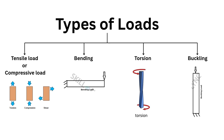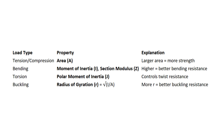Different shapes behave differently under these load conditions. There are some key properties from which we can easily understand the section strength under different types of loading. In tension or compression, the important property is the cross-sectional area — if the area is larger, it gives more strength. In bending, the moment of inertia and the section modulus play a key role; higher moment of inertia and section modulus means better bending resistance. In torsion, the polar moment of inertia is very important.